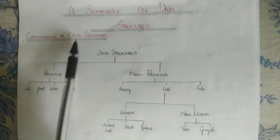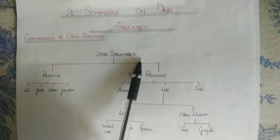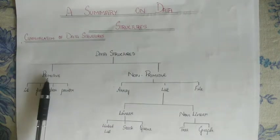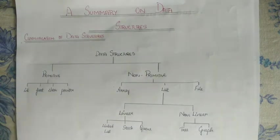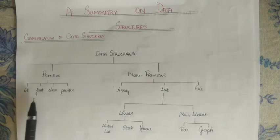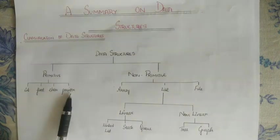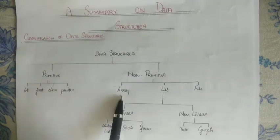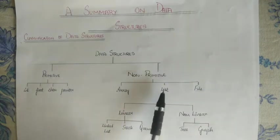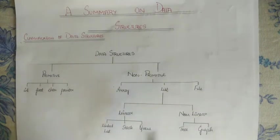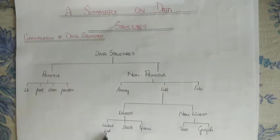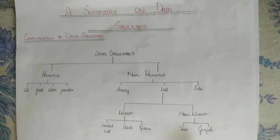Now let's see the classification of data structures. Data structures can be divided into two main groups, primitive and non-primitive. Primitive deals with int, float, char, and pointer. Here, non-primitive deals with array, list, and file. So list further has two subdivisions, linear and non-linear. Linear is linked list, stack, queue, and non-linear is tree and graph.